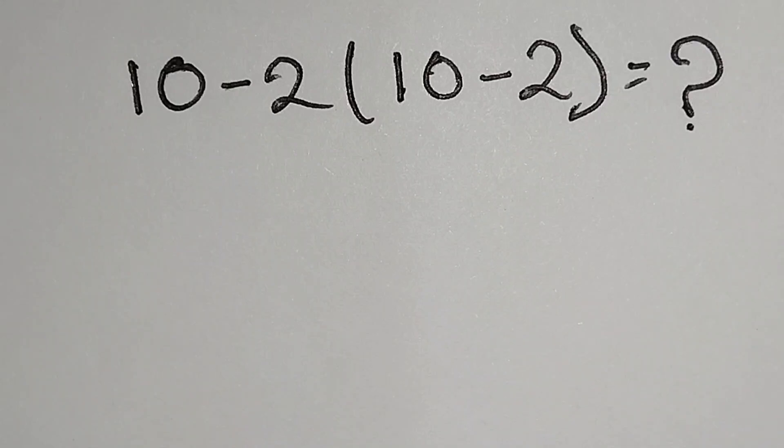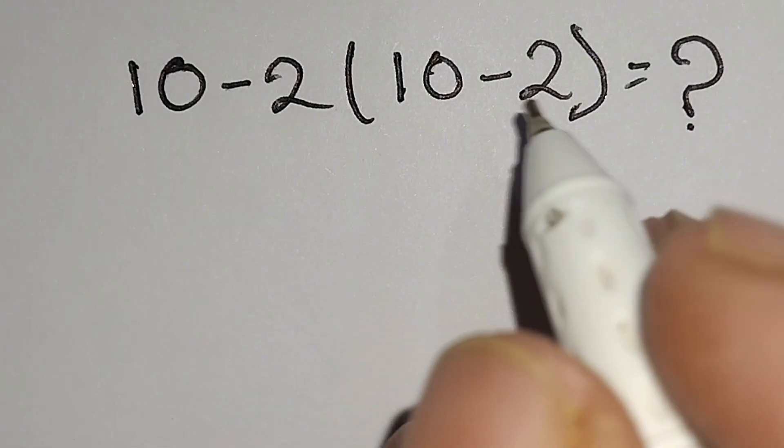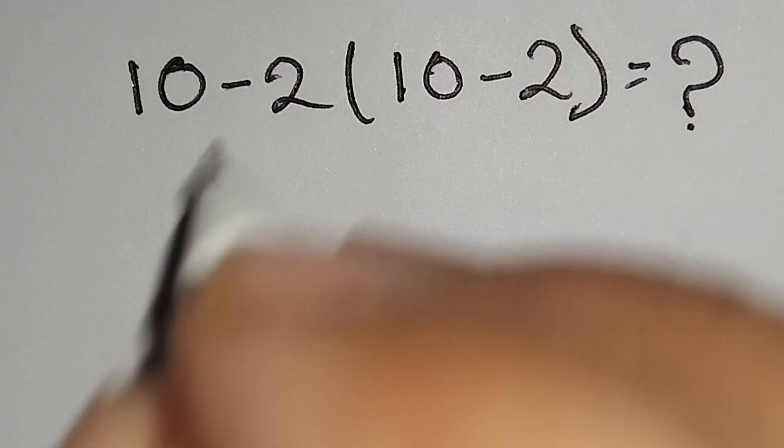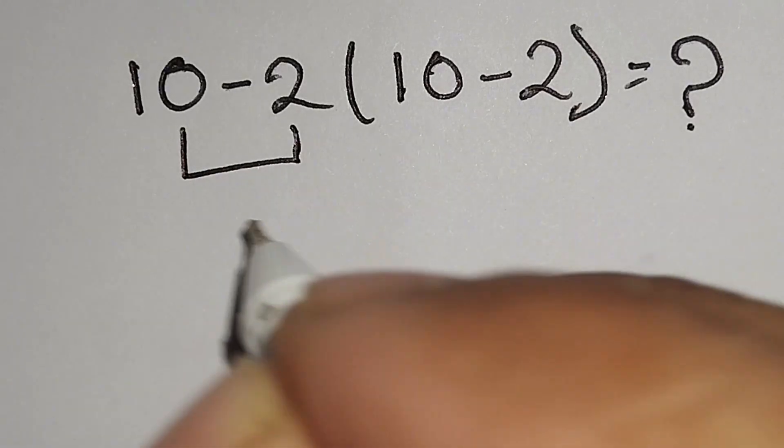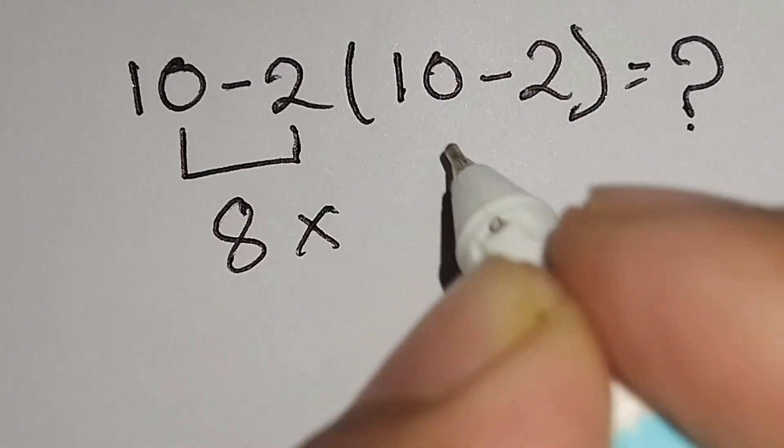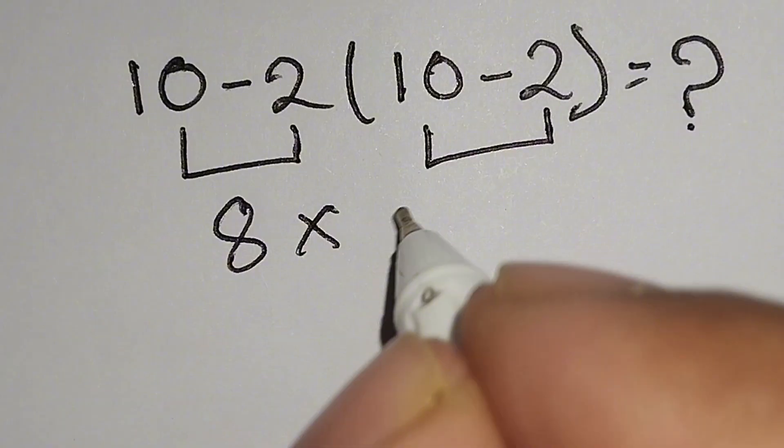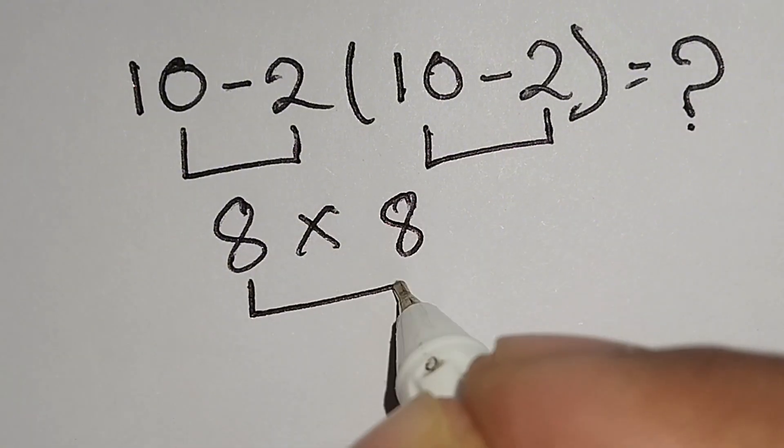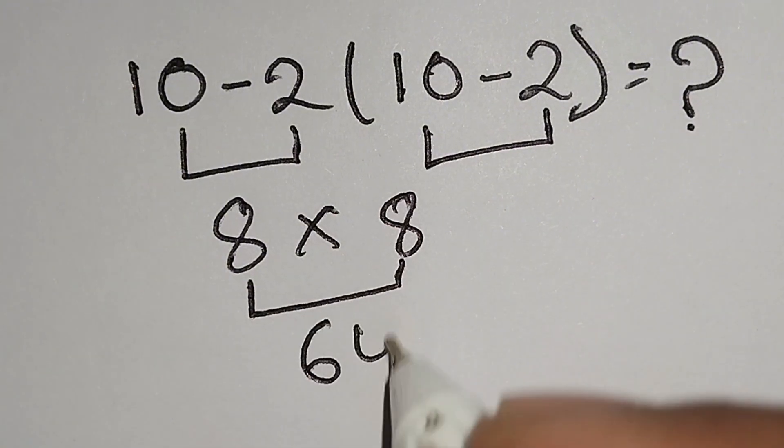Hi guys, this is a nice math problem: 10 minus 2 bracket 10 minus 2 equals what? Here, this 10 minus 2 gives us 8, multiply this 10 minus 2 gives us 8, 8 multiply 8 gives us 64, but it is not correct.